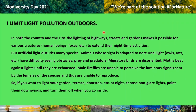Limit light pollution outdoors. In both the country and the city, the lighting of highways, streets, and gardens makes it possible for various creatures to extend their nighttime activities. But artificial light disturbs many species. Animals whose sight is adapted to nocturnal light, such as owls and rats, have difficulty seeing obstacles, prey, and predators. Migratory birds are disoriented. Moths beat against lights until they are exhausted. Male fireflies are unable to perceive the luminous signals sent by females and thus are unable to reproduce. So if you want to light your garden, terrace, or doorstep at night, choose non-glare lights, point them downwards, and turn them off when you go inside.